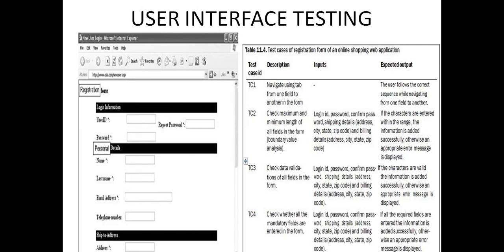Let us take the example of a login and registration form for user interface testing. We need to provide a user ID, password, repeat password, personal details, and shipping address. We create test cases for the registration form: test case one checks the maximum and minimum length of all fields such as login ID, password, and confirm password — they must accept a maximum number of characters and boundary values should be identified. Test case two checks data validation: no text field can be left empty, and if so, a message should be given to the user to provide values in the proper format.